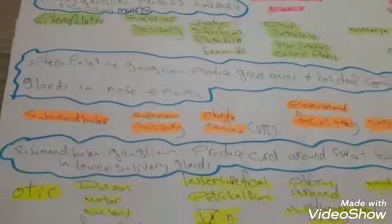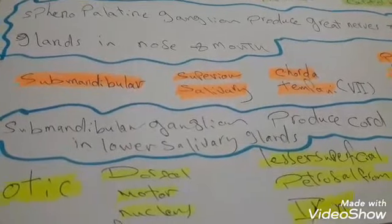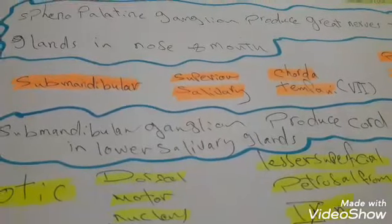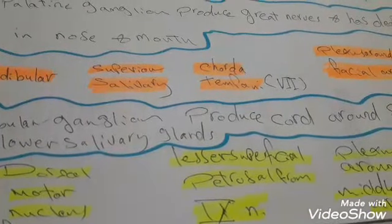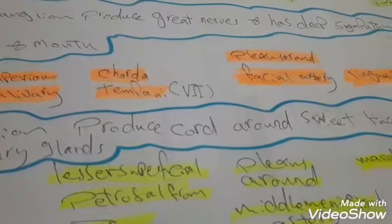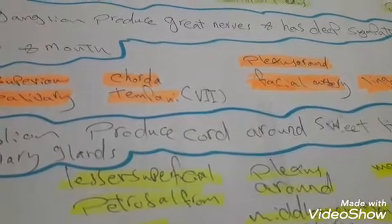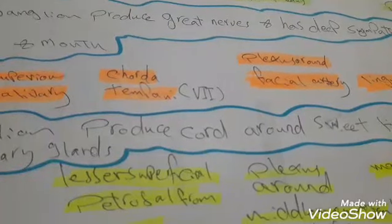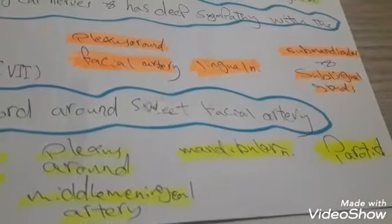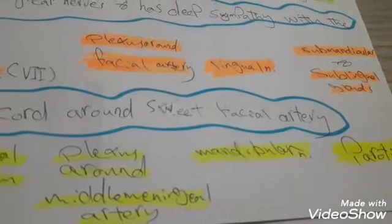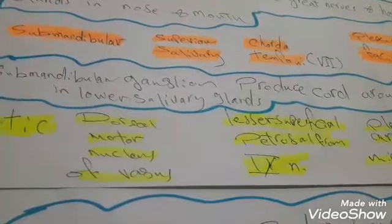The submandibular ganglion: its nucleus is the superior salivatory nucleus. The parasympathetic root is the chorda tympani from the facial nerve. The sympathetic root is the nerve from the plexus around the facial artery. The sensory root is the lingual nerve. The target is the submandibular and sublingual glands.